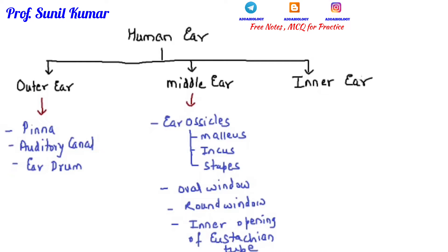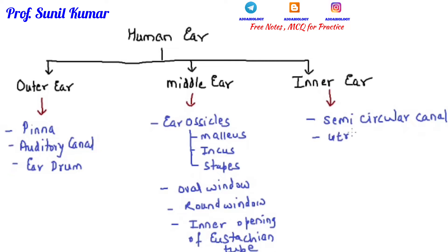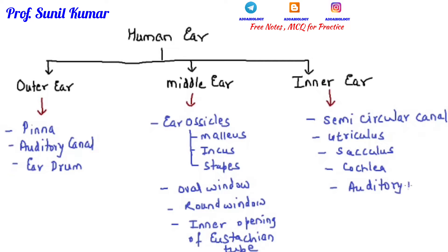The components of the inner ear include: first, the semi-circular canal; second, the cochlea; third, the utriculus; the sacculus; and the auditory nerve. All these are the parts of the human ear.